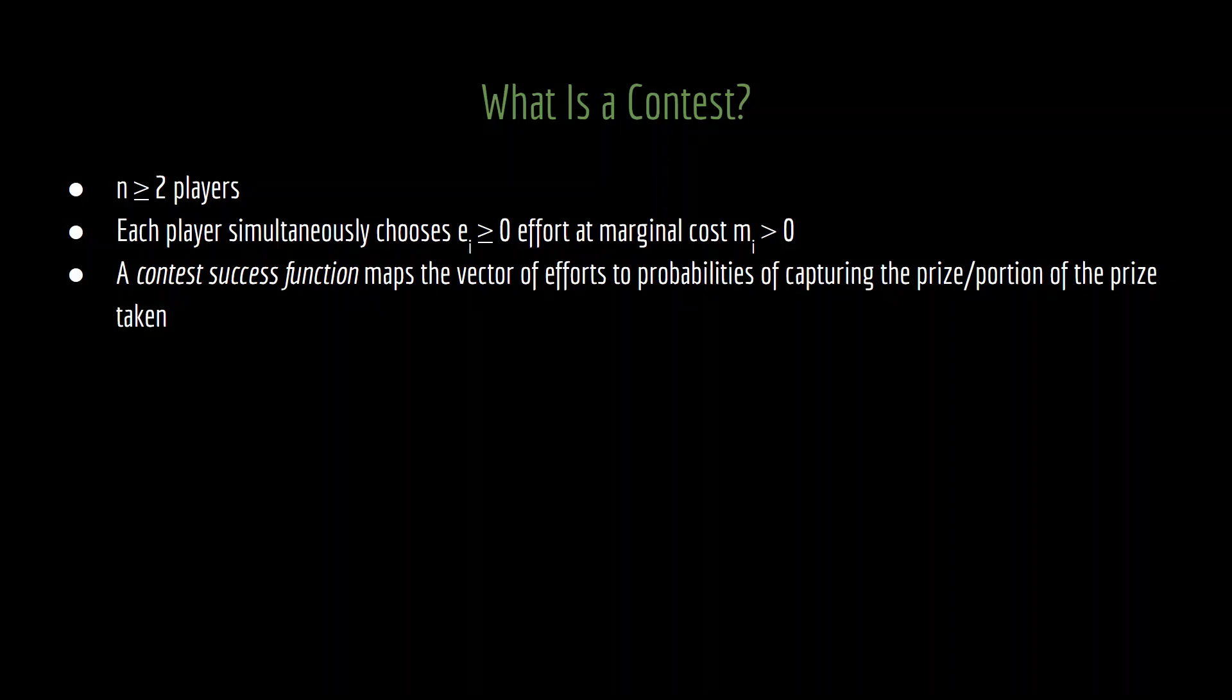Effort is not free, and so we're going to have a marginal cost of effort, m_i. Again, i denoting that this is group i's marginal cost. And that marginal cost is just some positive amount. And then we have the most important part of this, the contest success function. This is simply a function that maps the vector of effort levels that each of the players has chosen to a probability of capturing the prize or a portion of the prize taken.